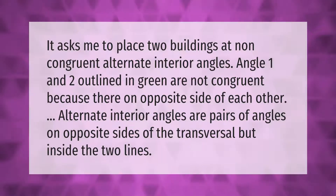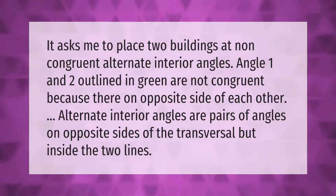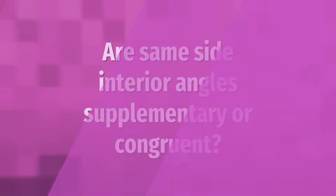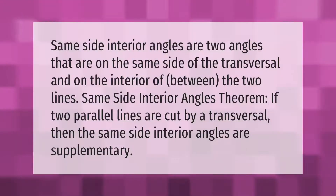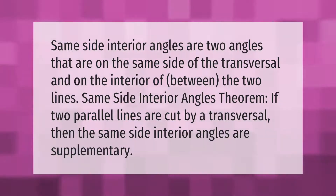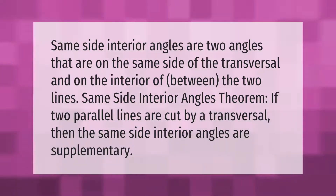Alternate interior angles are pairs of angles on opposite sides of the transversal but inside the two lines. Same side interior angles are two angles that are on the same side of the transversal and on the interior between the two lines. Same side interior angles theorem: if two parallel lines are cut by a transversal, then the same side interior angles are supplementary.